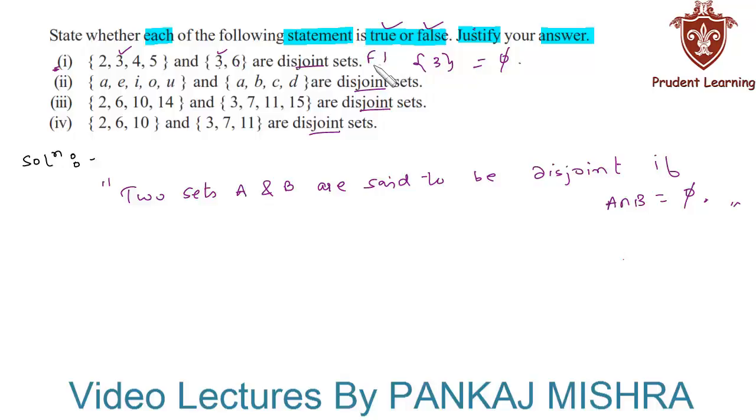In the second section, we have a set of vowels and a set containing elements a, b, c, and d. Here we can see that 'a' is common to both sets, so their intersection will be a set containing element 'a', which is not a null set. Hence, the given statement is also false.